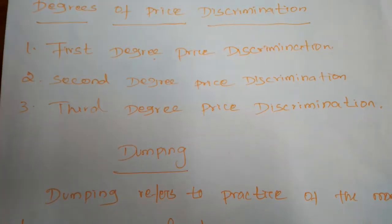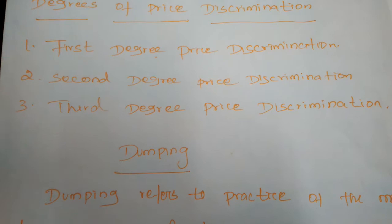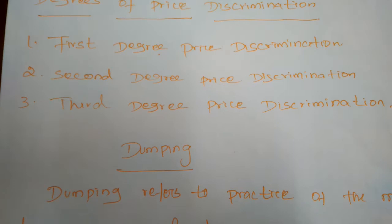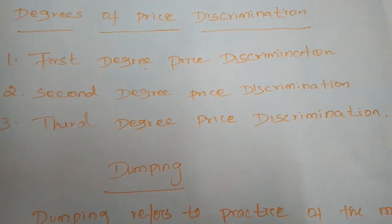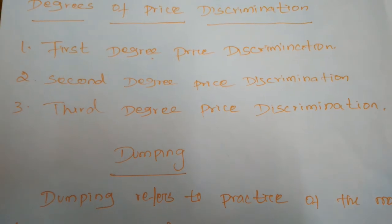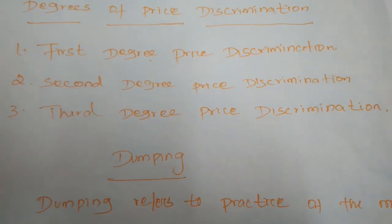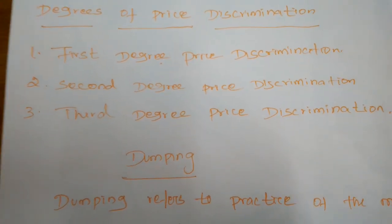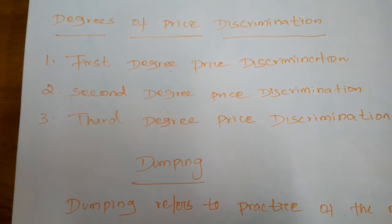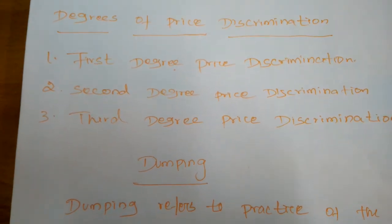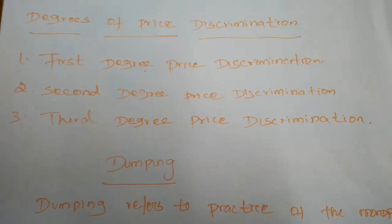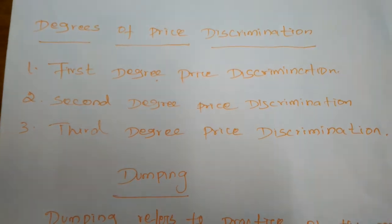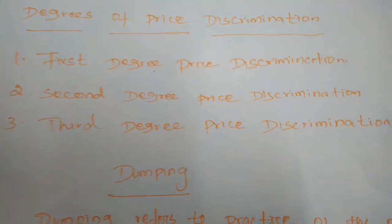Next is second degree price discrimination. Under this degree, buyers are charged prices such that part of their consumer surplus is taken away by the sellers. Even if there is consumer surplus, the monopolist takes away some part of it from consumers. This is called imperfect price discrimination, where some consumers have the possibility of making bargaining actions.